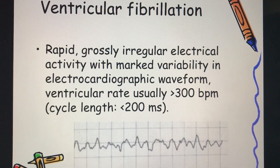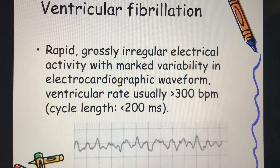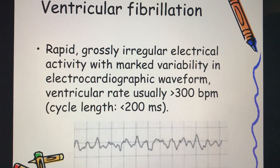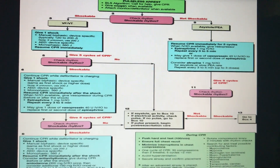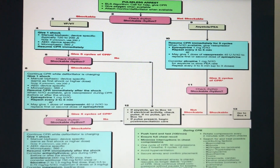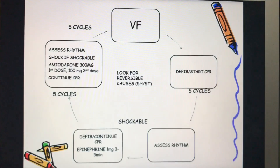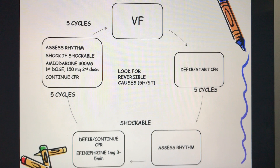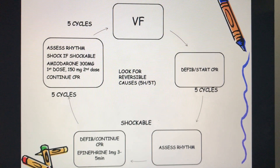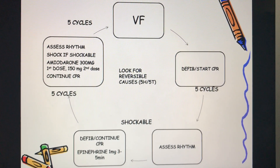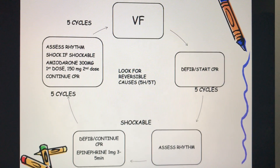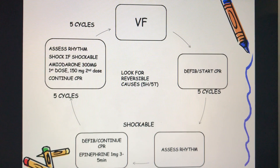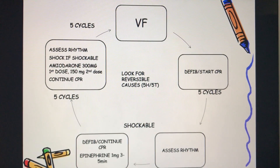Ventricular fibrillation consists of rapid, grossly irregular electrical activity with marked variability in ECG waveforms and a ventricular rate usually more than 300 beats per minute. This follows the ACLS guidelines for VF management. If your patient develops ventricular fibrillation, immediately defibrillate — early defibrillation is recommended — and immediately start CPR, continuing for five cycles or two minutes, then assess the rhythm.